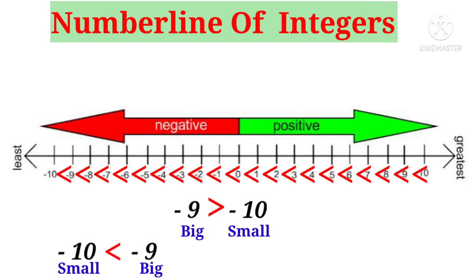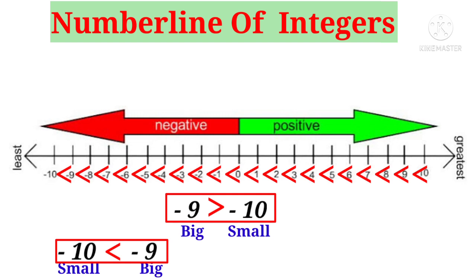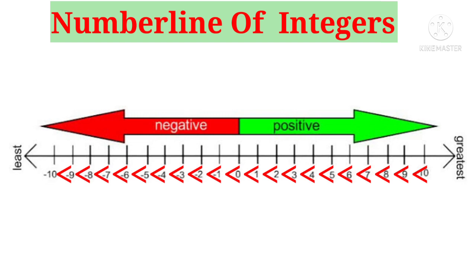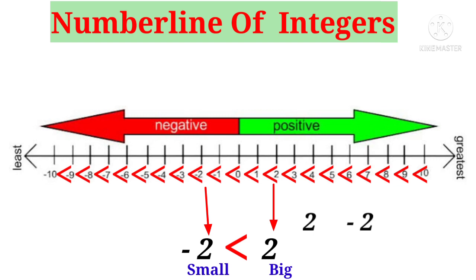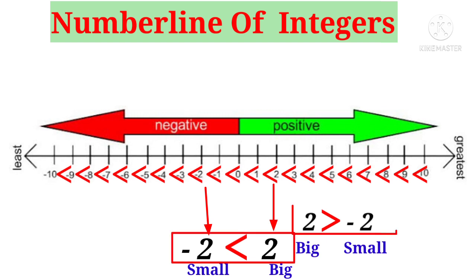So we can say that minus 10 is less than minus 9, but minus 9 is greater than minus 10. Now let us take different integers: minus 2 (a negative integer) and 2 (a positive integer). We can put less than symbol because minus 2 is small and 2 is big. If you reverse these numbers, we put greater than symbol because 2 is big and minus 2 is small. So minus 2 is less than 2, and 2 is greater than minus 2.